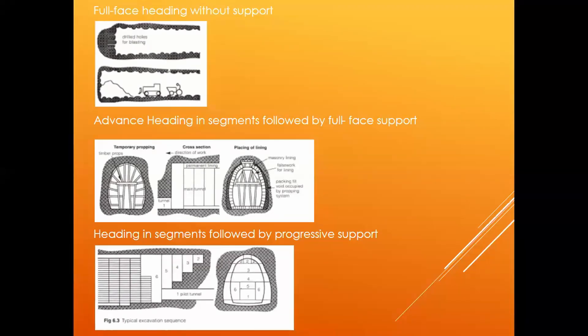If the rock isn't too stable, you use advanced heading in segments followed by full face support. You blast in different segments of the tunnel, and then the face is supported completely after the blast. If the soil really isn't stable at all, you use heading in segments followed by progressive support.